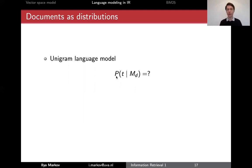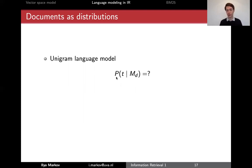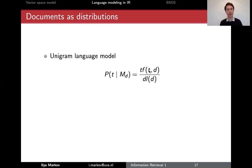How would we calculate this probability if we are given a document — just a written document with many words where words may occur multiple times? Let's say we are given the home page of the University of Amsterdam. Given the unigram language model where all words are independent, the natural thing to do is maximum likelihood estimation.